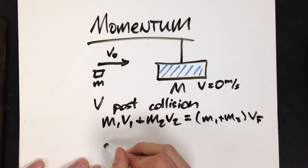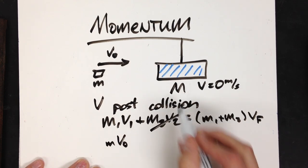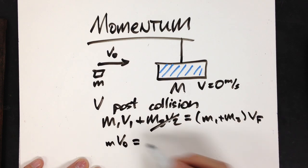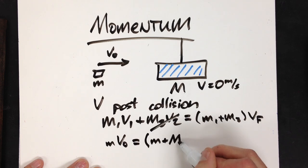Now, if I make m1 my bullet and v0 its initial speed, well, m2 is my block and it has no initial momentum. My final momentum is going to be little m plus big M times v final.